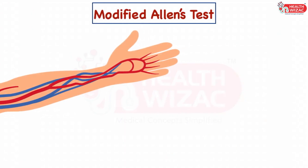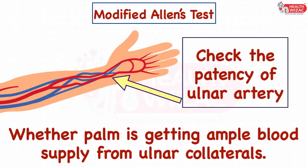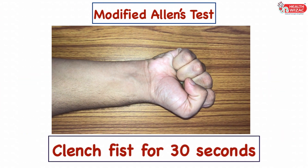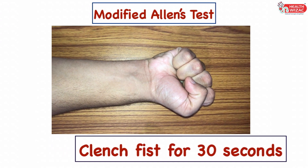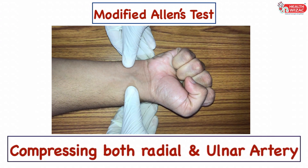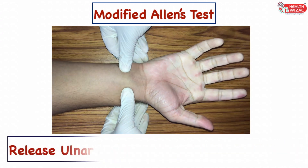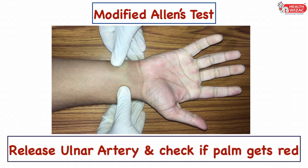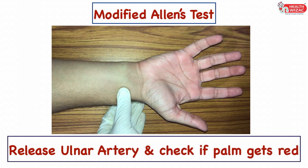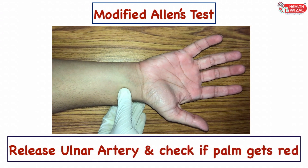It is usually advisable to perform the modified Allen's test before ABG. This is done to check the patency of the ulnar artery and to avoid damage to the hand if the radial artery gets embolized during or post procedure. The test is done by asking the patient to clench their fist for 30 seconds, then compressing both radial and ulnar arteries, and slowly releasing the ulnar artery to check whether the palm is getting ample blood supply from ulnar collaterals.